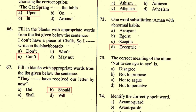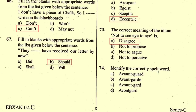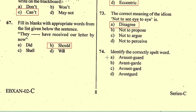Question number 73: The correct meaning of the idiom 'not to see eye to eye' is — not to agree with someone, or not to share someone's position or opinion. The right option is A, disagree. Question number 74: Identify the correctly spelt word — it is given in option B, 'avant-garde', meaning radically new or original.